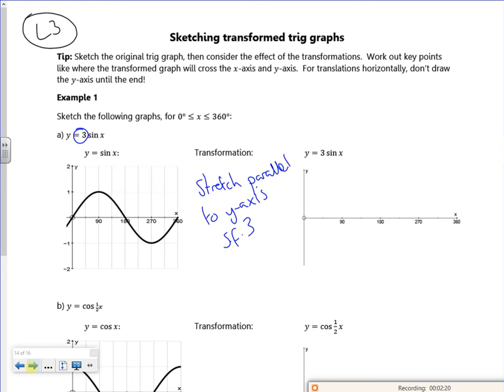So I've still got the same graph. I put dots in roughly where I should be. And you can graph it on your calculators. But instead of going from plus or minus one, I go plus or minus three. That's your first one.